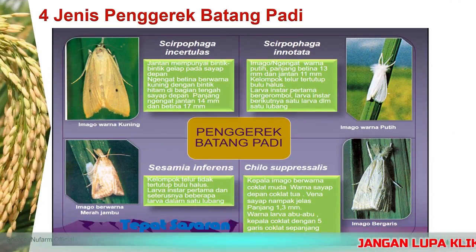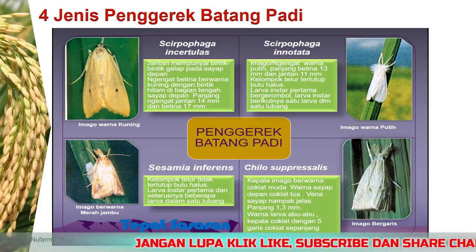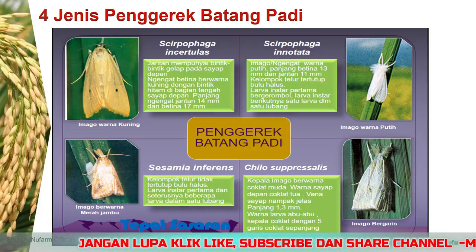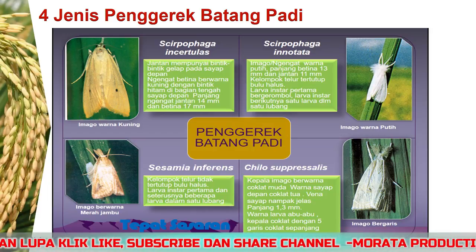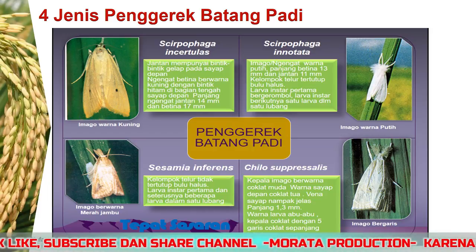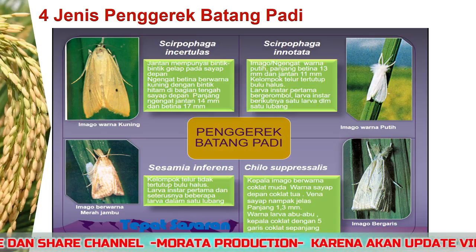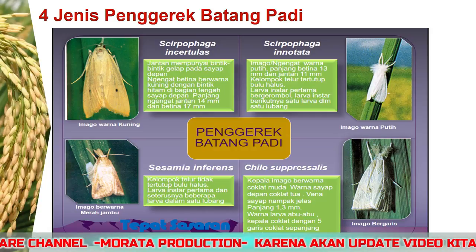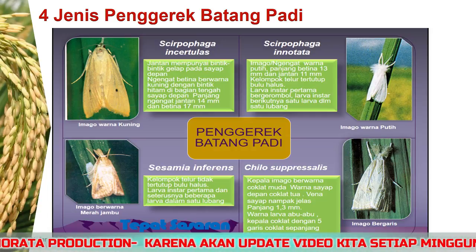Ada empat jenis penggerek batang padi: yang pertama, Scirpophaga incertulas atau penggerek batang padi warna kuning, dengan ciri jantan mempunyai bintik-bintik gelap pada sayap depan, ngengat betina berwarna kuning dengan bintik hitam di bagian tengah sayap depan, panjang ngengat jantan 14 mm dan betina 17 mm.